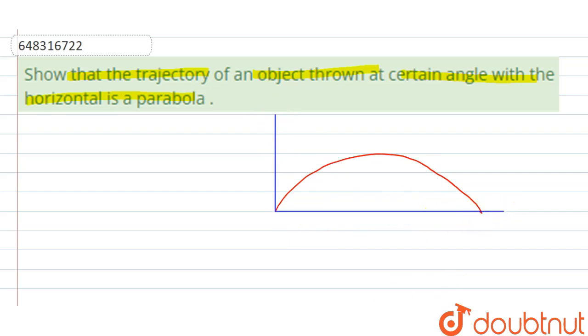This is an angle theta and its initial velocity u at angle theta. So its initial velocity along x direction, that is ux equals u cos theta, and its initial velocity along y direction, that is uy equals u sin theta.